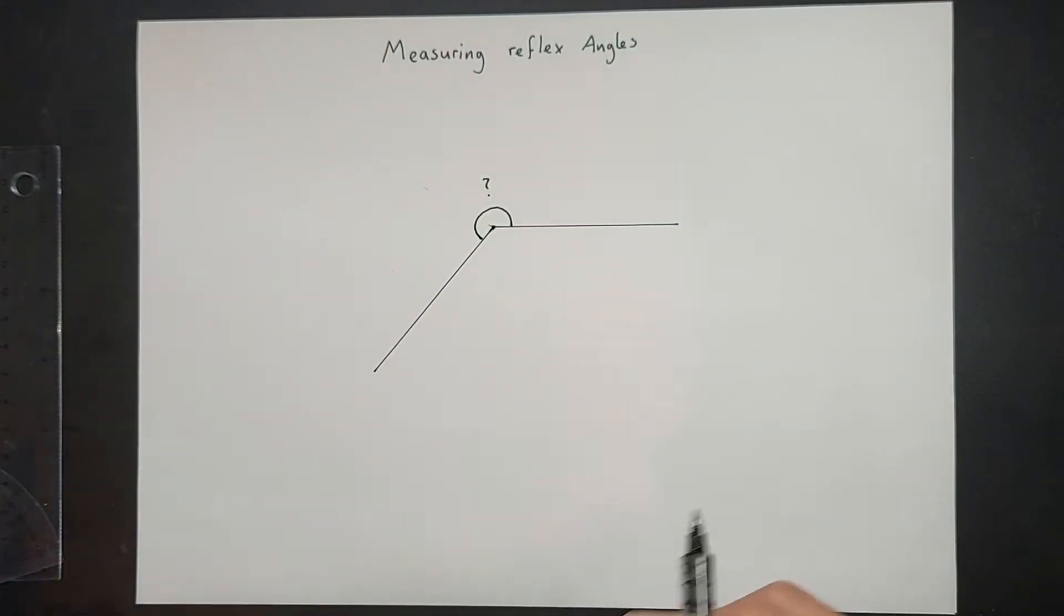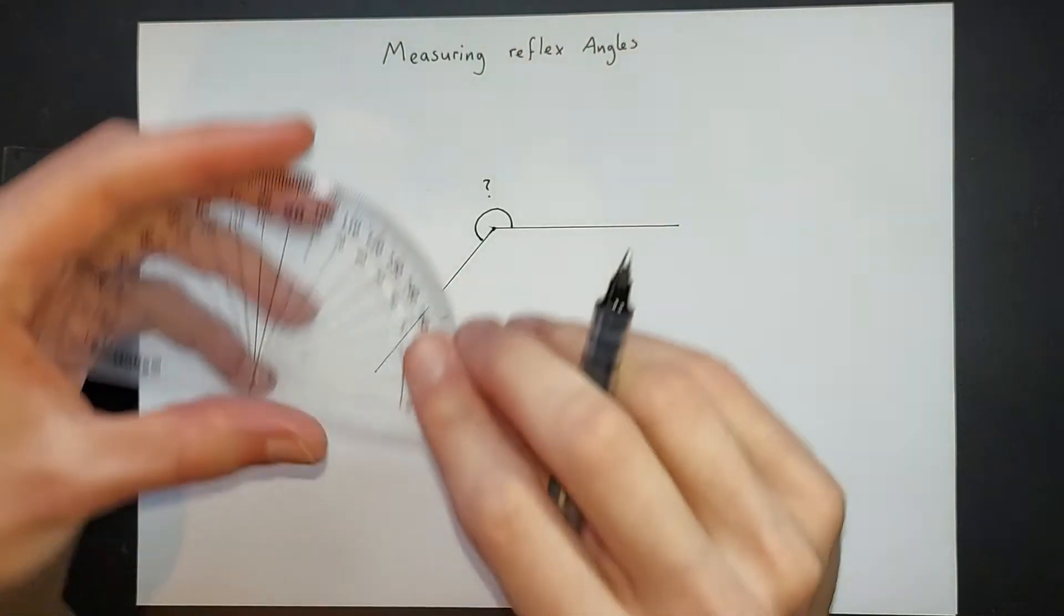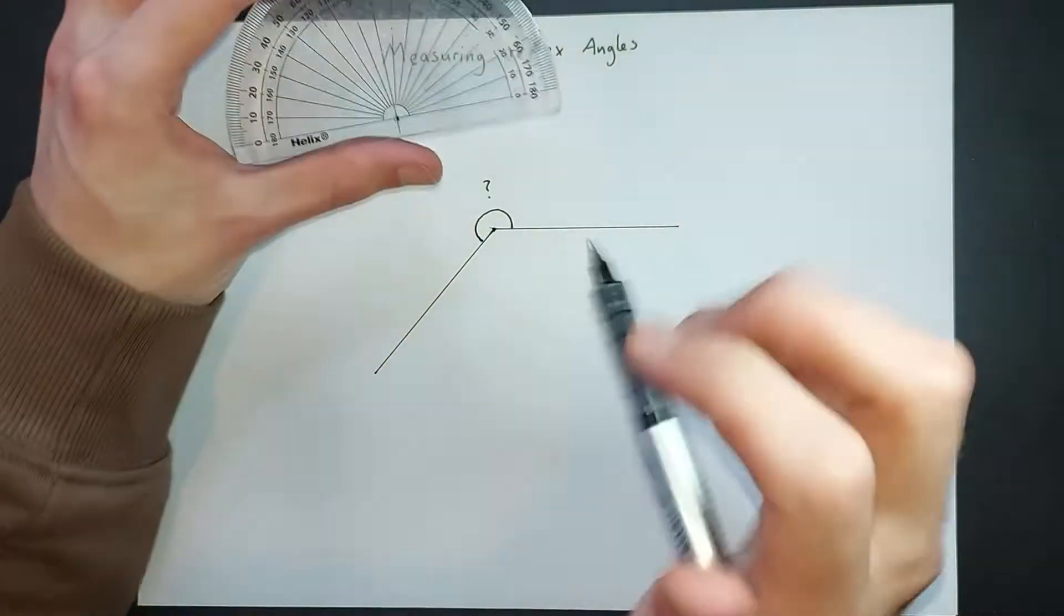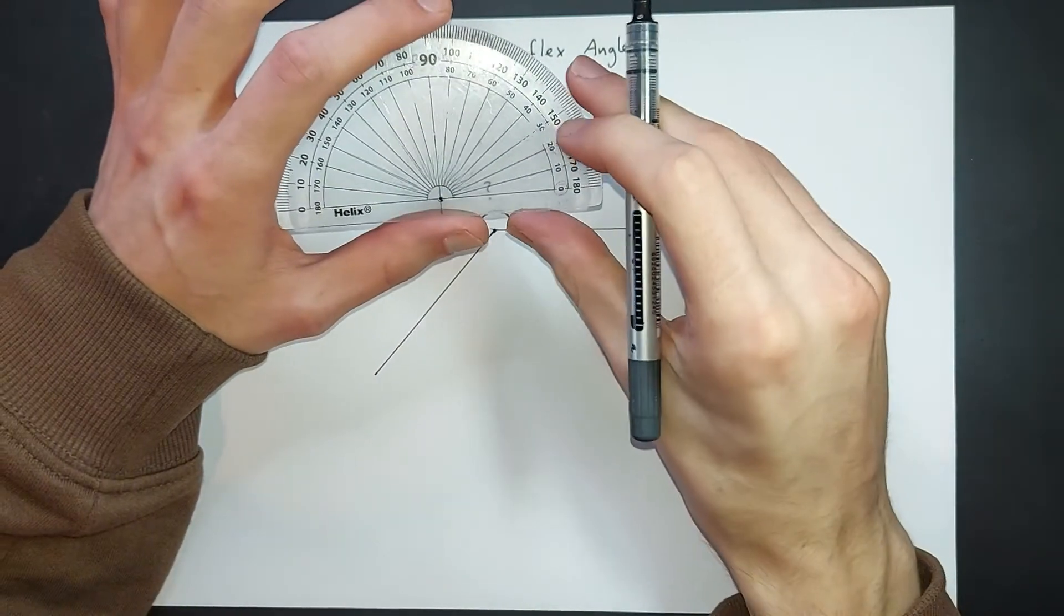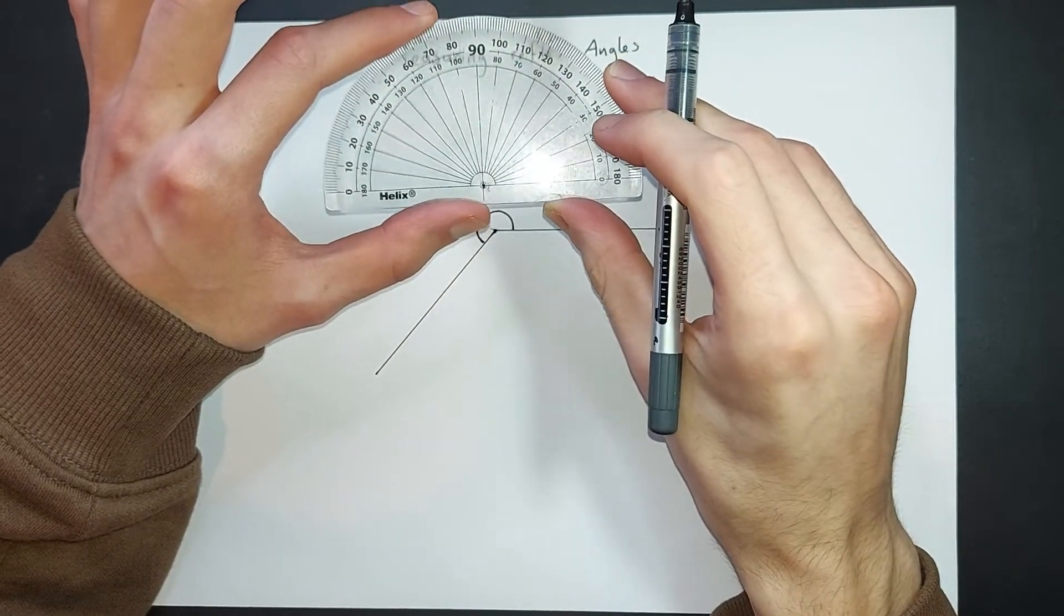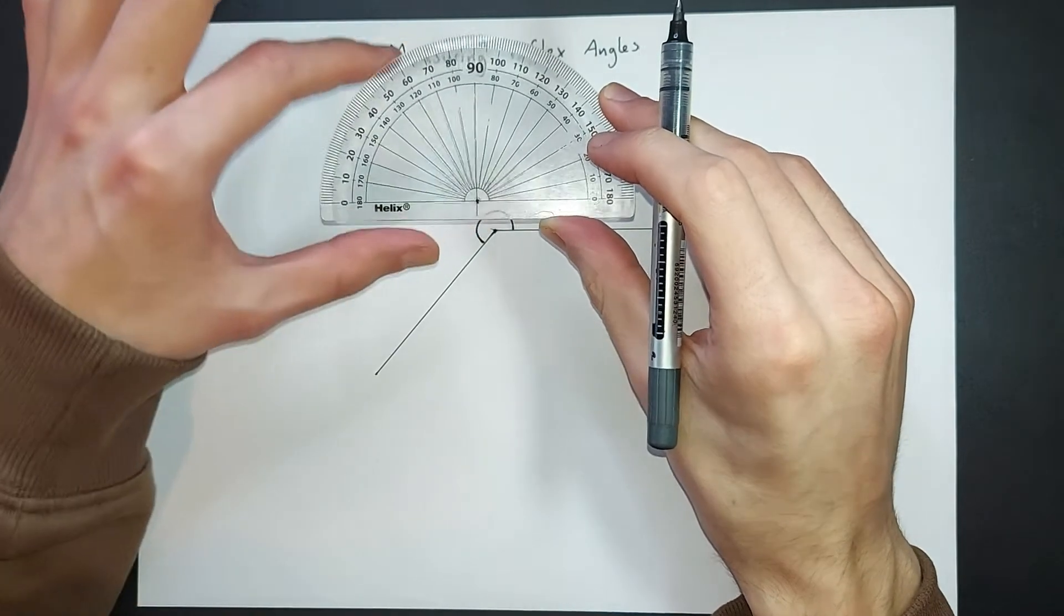So immediately, I'm hoping we're confident the baseline and the cross is now. We should have looked at that for acute and obtuse angles. Immediately we should hopefully be able to see when we place it here in the correct position.